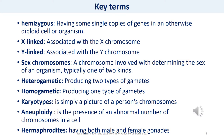Before we start today's lecture, let me familiarize you with a few terms. First, hemizygous is the condition of having a single copy of a gene in an otherwise diploid cell or organism. Then we have X-linked genes and Y-linked genes: an X-linked trait is associated with the X chromosome, while a Y-linked trait or gene is associated with the Y chromosome.